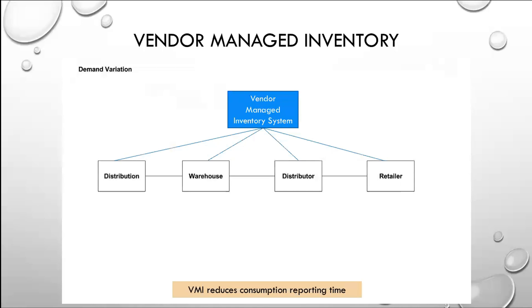What we do is the vendor controls the entire chain by telling everybody in this chain what they need to do. So in this case, you've got four entities. The first block is supposed to be Manufacturer. So you have the Manufacturer, the Warehouse, the Distributor, and the Retailer. And the vendor, which is the person at the end — the retailer — basically determines how much product will be in the pipeline at one time.